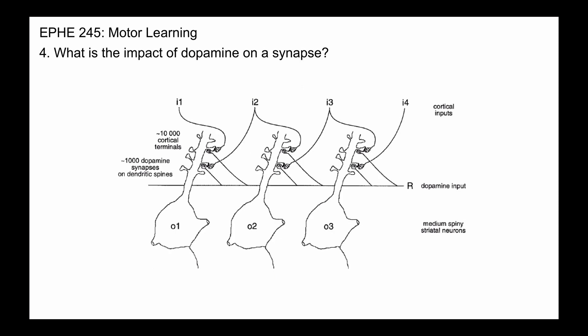In terms of a larger scale, you can imagine that the dopamine system is connected to a large number of neurons, and thus it's able to selectively strengthen neurons that are used in movement production, or in terms of any skill.